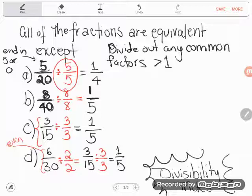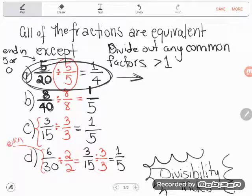So it really doesn't matter how many common factors you divide out, as long as you keep going until the two numbers have nothing left in common bigger than 1. So looking at these, B, C, and D all came to 1/5. So all of the fractions are equivalent except 5/20. 5/20 reduces to 1/4. Great. If you have any questions about this, be sure to let me know.